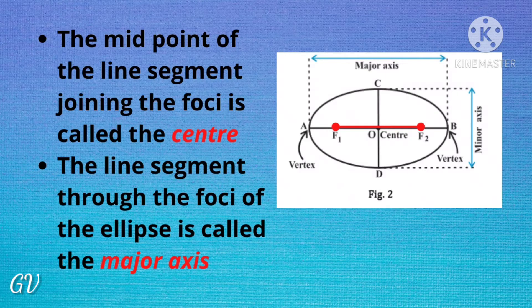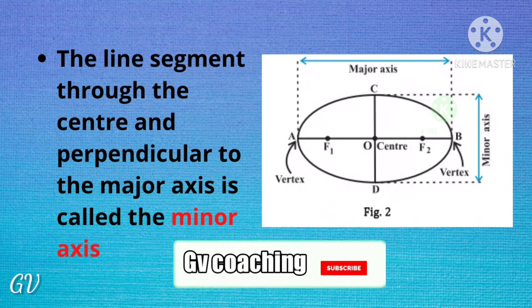The midpoint of the line segment joining the foci is called the center. The line segment through the foci is called the major axis. The line segment through the center and perpendicular to the major axis is called the minor axis.